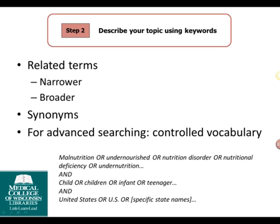Once you have your research question, the next step is to describe it using keywords. You may want to create a list of keywords before you do any searching. This list gives you a starting place that may grow and change as you think about your topic, read more about it, get exposed to synonyms, and see the controlled vocabulary. Keywords are one or two word phrases you'll use to put together your search, and may or may not be explicitly stated in your research question. Think about related terms, including broader or narrower ones. Synonyms are also important, as not every article or book describes the same topic with the same words. Taking advantage of controlled vocabulary in databases like a library catalog or PubMed can also be very helpful for locating items about your topic that use different words to describe it.